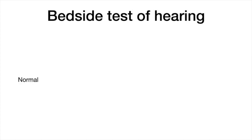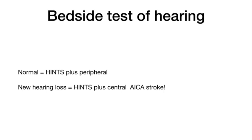Lastly, the plus part of the HINTS-Plus exam. Her bedside test of hearing with the finger rub test was normal on both sides — that's a HINTS-Plus peripheral result. A new loss of hearing in a patient with acute vestibular syndrome is a HINTS-Plus central result, as this is concerning for an anterior inferior cerebellar artery stroke, where the cerebellum and the end organs of balance and hearing are infarcted.